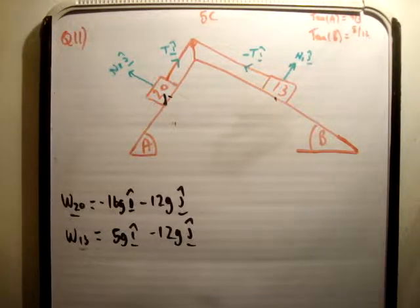It reads, the diagram shows two particles of masses 20 and 13 kilograms connected by means of a light and extensible string passing over a smooth pulley. The angles with the horizontal are given by tan A is equal to 4 thirds, tan B is equal to 5 twelfths. We find the acceleration of the particles and the tension in each string initially when there is no friction and secondly when there is friction with a coefficient of 1 quarter.